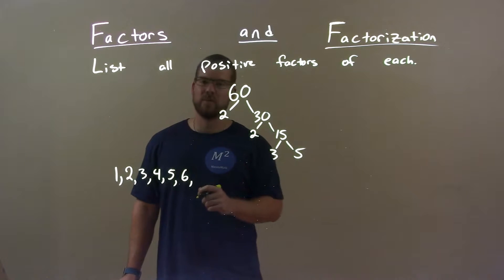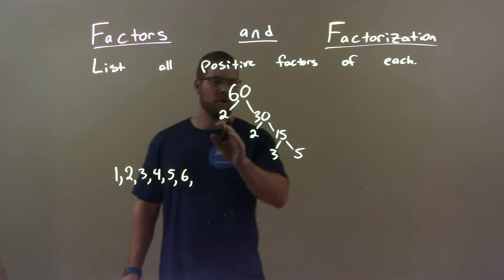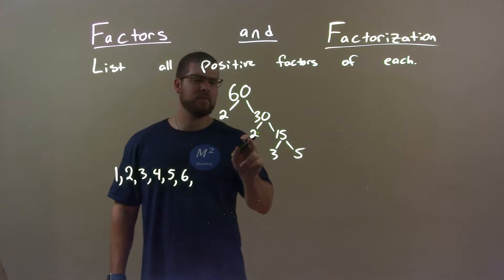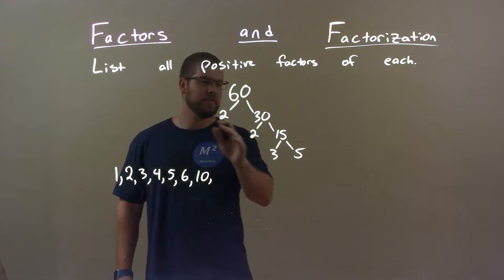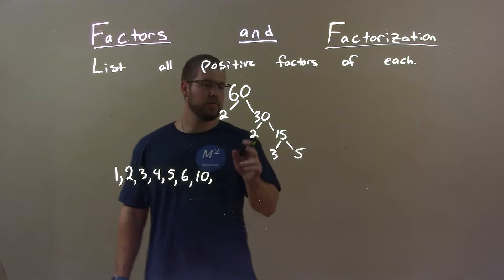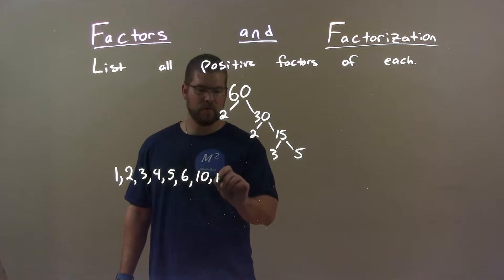But 7, nothing I can multiply gets me to 7. What about 8? Well, 2 times 2 is 4. No, nothing I can multiply. 8, 9, nope. 10. 2 times 5 is 10. 11? No. 12. 2 times 3 is 6. Times 2 is 12. Great.